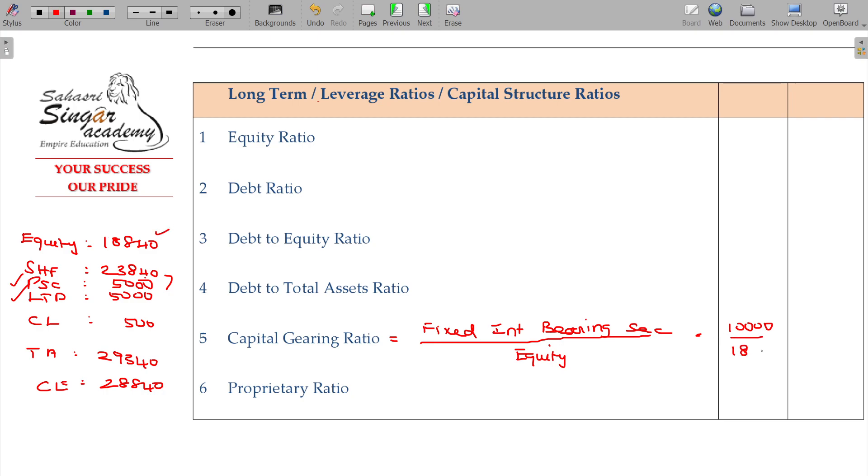Debt to equity ratio is number three. Debt to equity ratio - debt should be numerator, denominator equity. Again, debt to equity.